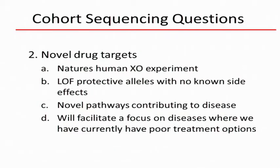The second category was a lot of input on novel drug targets. Francis mentioned this idea of the human knockout experiment — loss of function of protective alleles. Novel pathways is another area where identification of rare variants for human disease will give us insight into novel pathways that pharma can then use as hooks for developing new therapeutics. We have a number of common diseases where we're really focusing today on palliative care. Having information about the role of loss-of-function variants in disease, we can actually begin to have better treatments and not just palliative care.